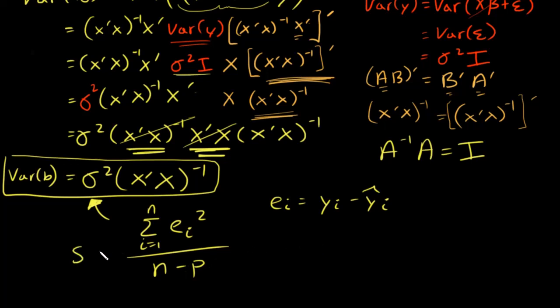So the sum of the squared residuals and divide that by n minus p. So this is called S squared. And I could rewrite this using vector notation as e transpose e, where e is an n by one vector. This is also called the mean squared error.